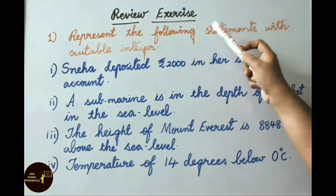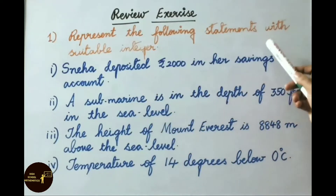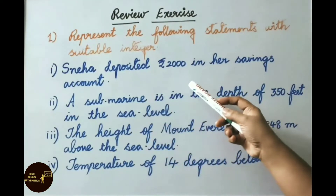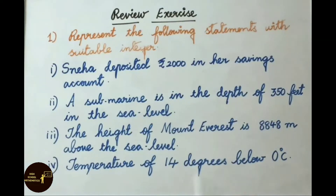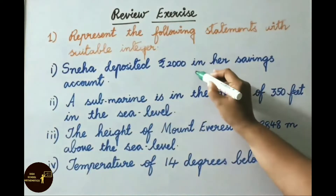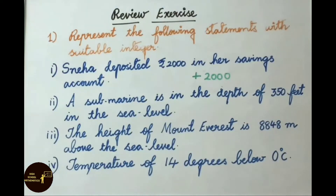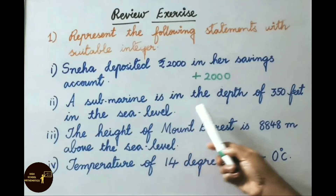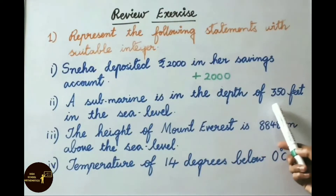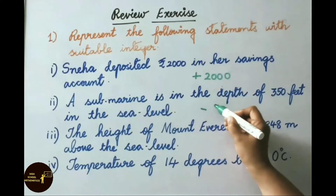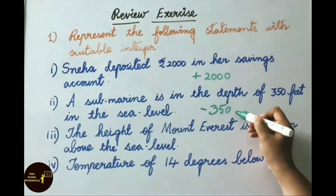Let us see the review exercise. Question 1: Represent the following statements with a suitable integer. First: Sneha deposited 2000 rupees in her savings account — deposited means positive, so the answer is +2000 rupees. Second: A submarine is at a depth of 350 feet below sea level — depth is negative, so the answer is -350 feet.